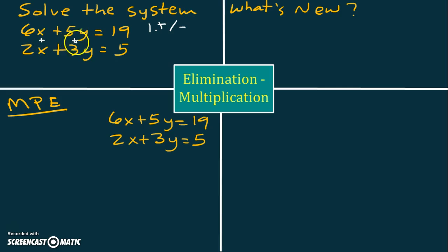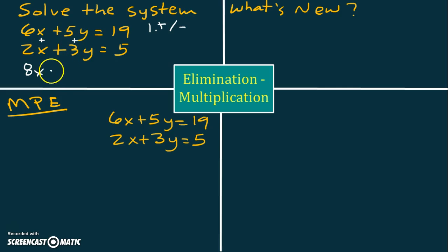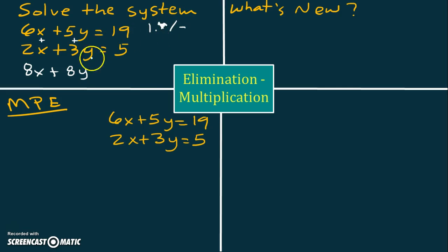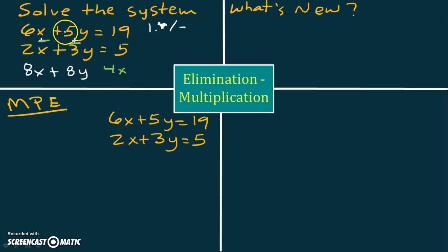If we add these two equations together, the number we get for x is 6 plus 2, that is 8x. So x did not eliminate when we added. What about y? 5 plus a positive 3 is also 8. So neither y nor x was eliminated when we added the equations together. If we subtract, we have 6 minus 2, that's 4x, so x didn't eliminate. And 5 minus 3 is 2, so y didn't eliminate either.